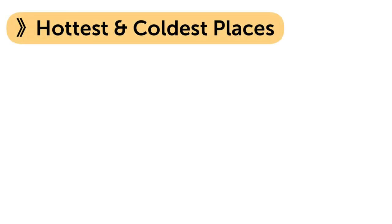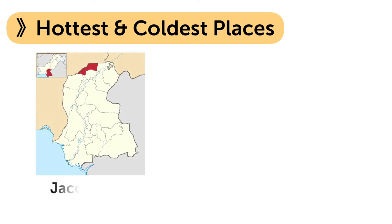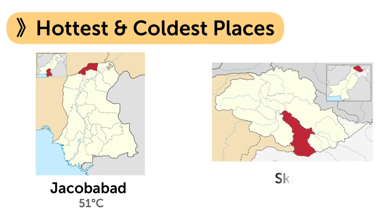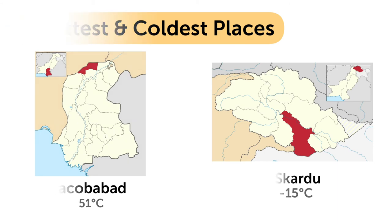The next point is hottest and coldest places of Pakistan. The hottest place of Pakistan is Jacobabad. The average temperature measured here is 51 degrees centigrade. The coldest place is Skardu, where the average temperature is minus 15 degrees centigrade.